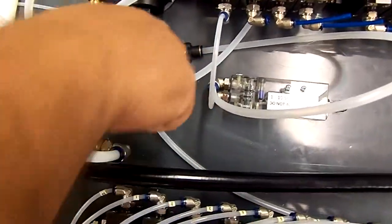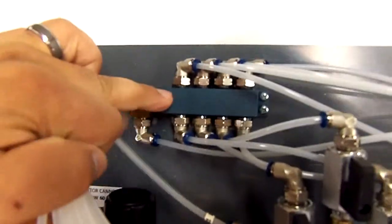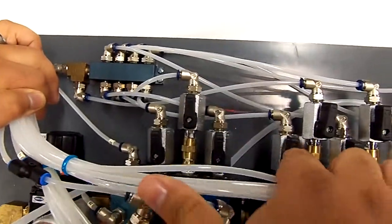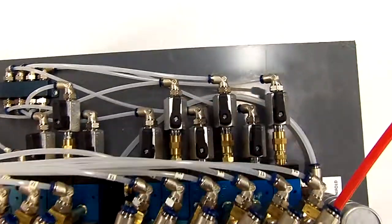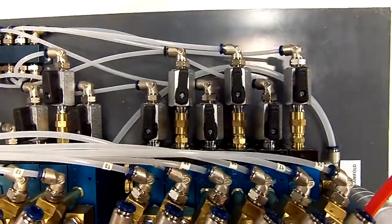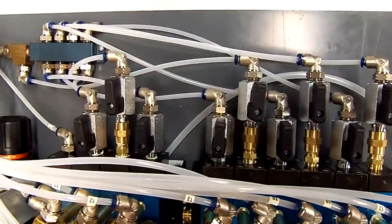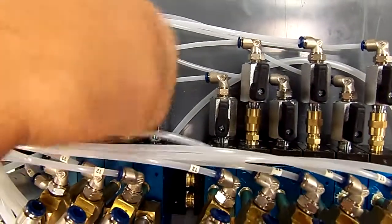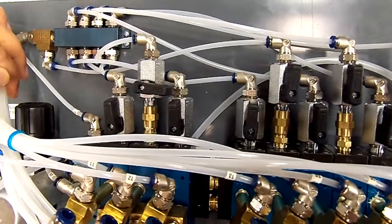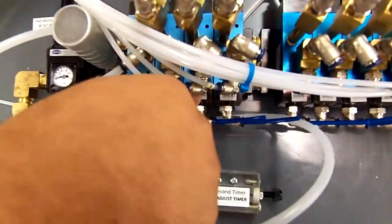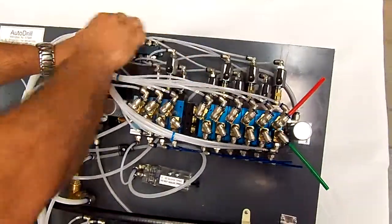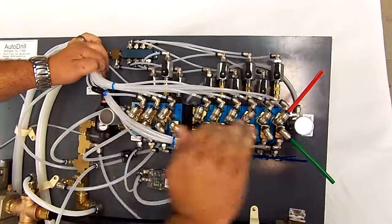First, it's going to send an air signal to this manifold up here, which is supplying air to all nine drills. You'll see these independent shutoff valves that allow the operator to choose which drill he wishes to be off and which drills to be on. By turning the valve to the off position, the supply air will not get to that drill. If he has them all open, the supply air will go to all of them and all the drills will extend.